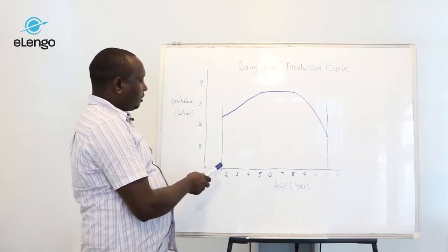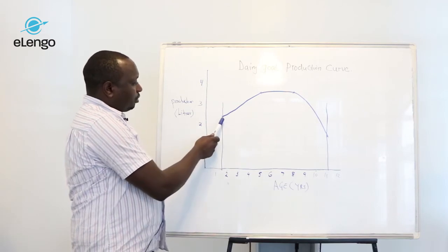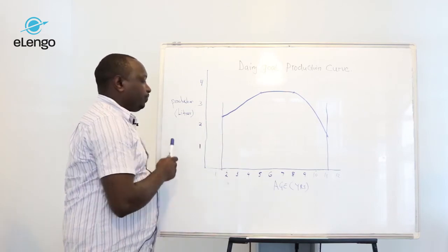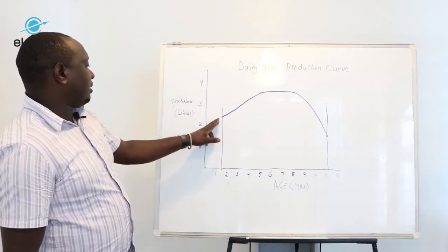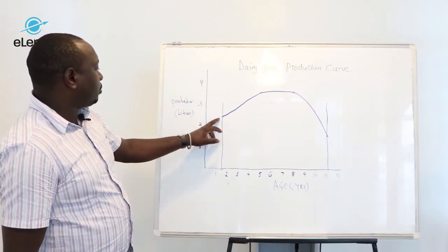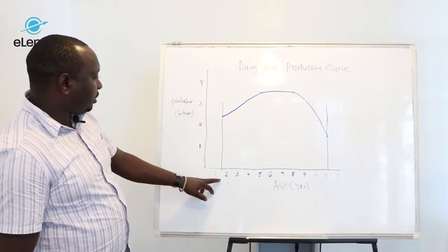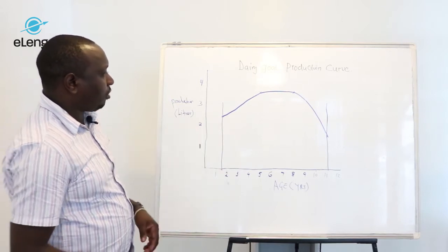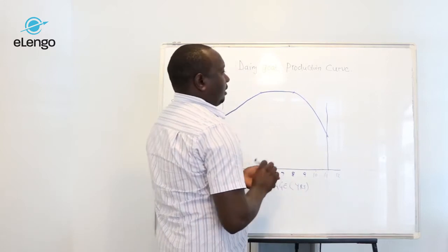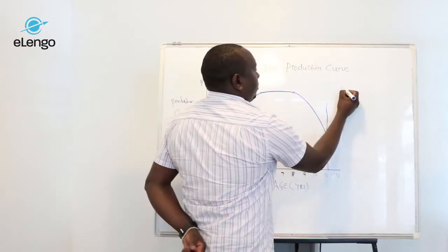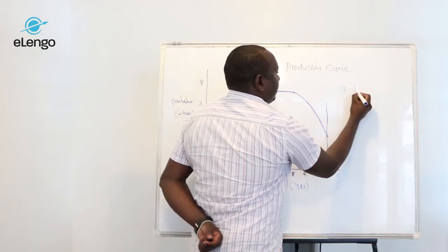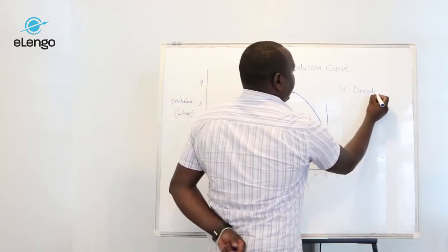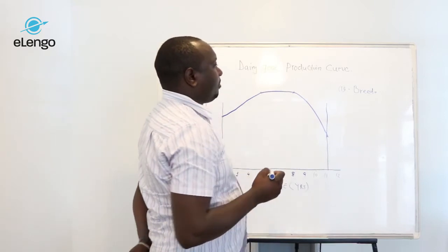It starts producing at two years. It's not always given that the goat starts producing two liters within the first maturation. This depends on factors such as the breed. If you look at the genetic makeup of a breed, the production is only contributed by 50 percent of the genetic makeup.